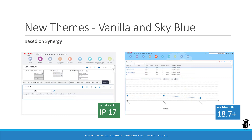IP17 and higher introduced two new themes. In addition to the Aurora theme introduced in IP14 and the Synergy theme introduced in IP15, there are now two more themes based on Synergy. The Vanilla theme, shown on the left, was introduced with IP17.0, and the Sky Blue theme, shown on the right, was introduced with 18.7. In higher versions we therefore have a total of four standard desktop themes.